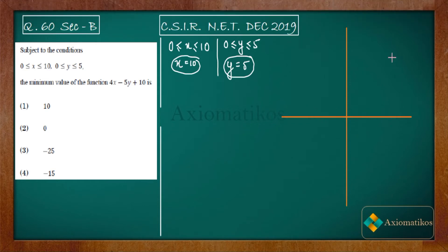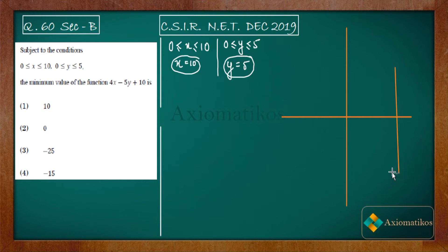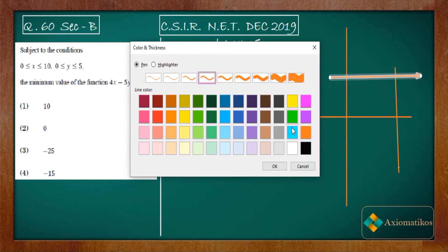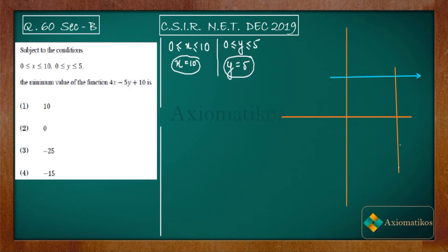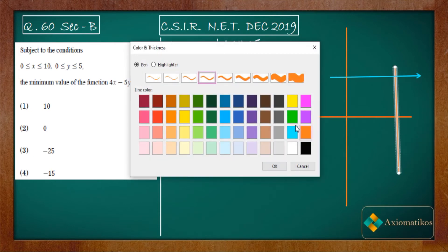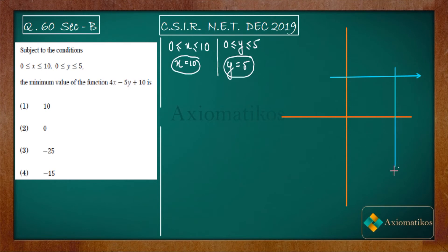Let us take this as 10 and draw another line. Let us say this line is y equals 5 — let us color them. So this line is y equals 5 and this line is x equals 10.